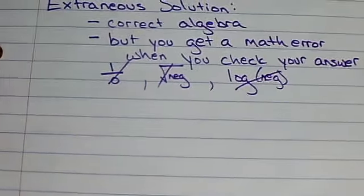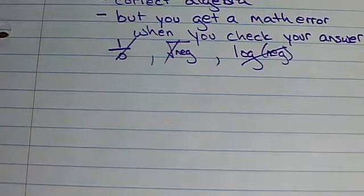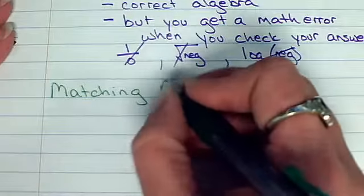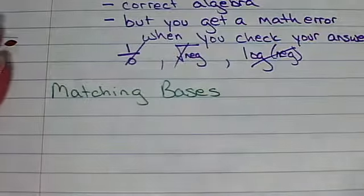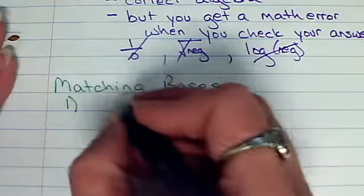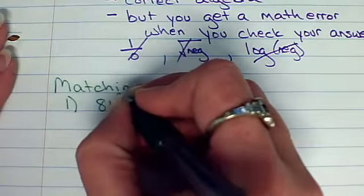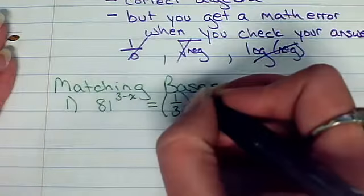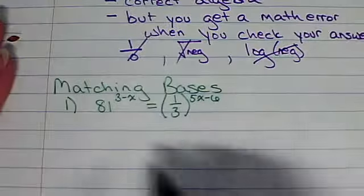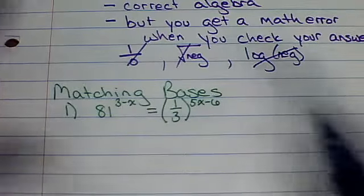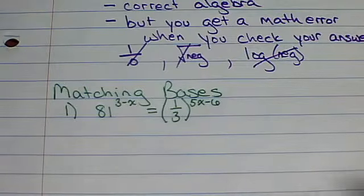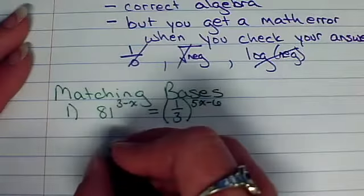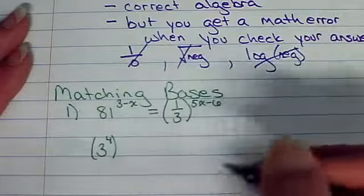Alright. Now, I want to go through some examples. And there's several situations that you're going to run into when you're solving equations. One of those situations is what I call matching bases. So in the matching bases situation, we want to make sure, well, matching bases, that our bases match. So let's look at a couple of examples here. 81 to the 3 minus x equals 1 over 3 to the 5x minus 6. Okay. So I said matching bases, but 81 and 1, those don't match. I'm just being crazy, right? Well, how about we try to make them match? So how can I rewrite 81 to have a base of 3? Well, that would just be 3 to the 4th because 3 squared is 9.